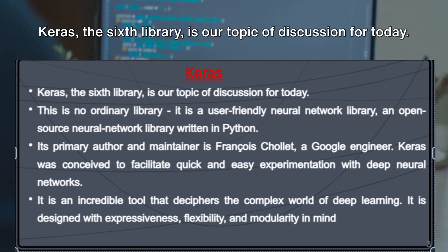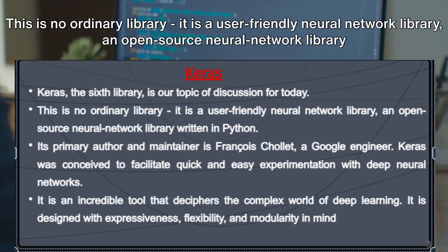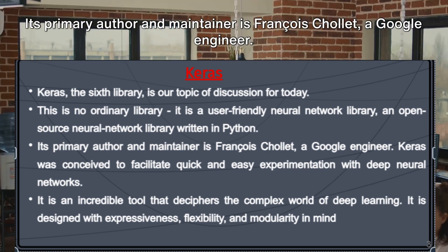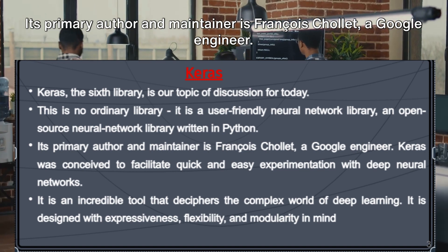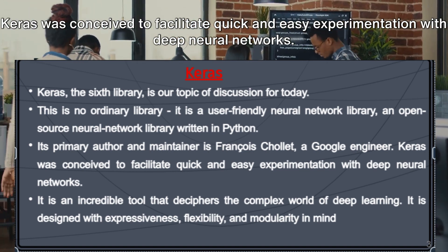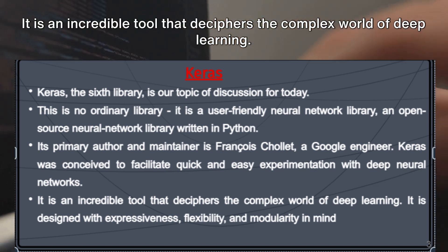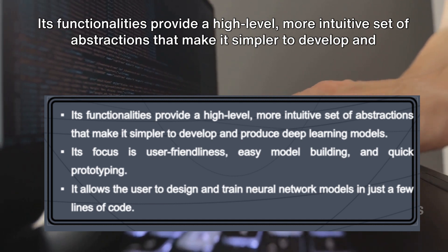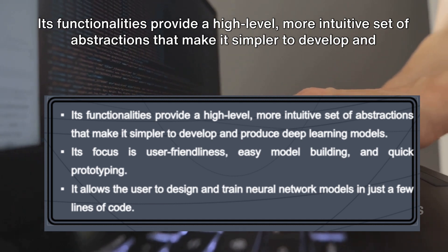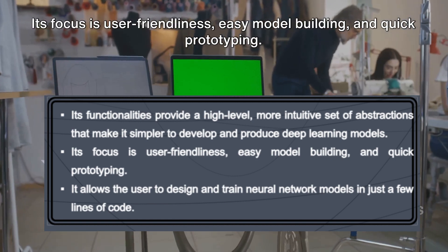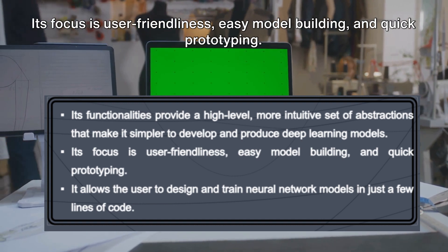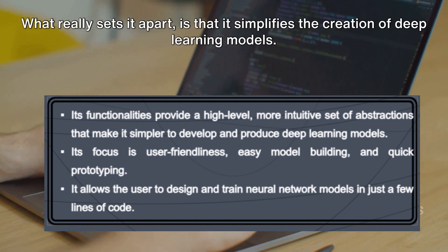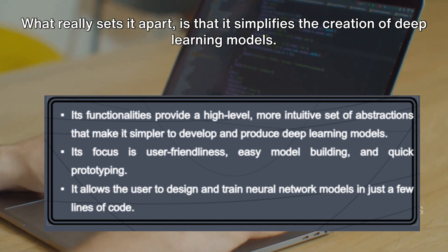Keras, the sixth library, is a user-friendly, open-source neural network library written in Python. Its primary author and maintainer is François Chollet, a Google engineer. Keras was conceived to facilitate quick and easy experimentation with deep neural networks. It is designed with expressiveness, flexibility, and modularity in mind, providing a high-level, intuitive set of abstractions that make it simpler to develop deep learning models. Its focus on user-friendliness, easy model building, and quick prototyping allows users to design and train neural network models in just a few lines of code.